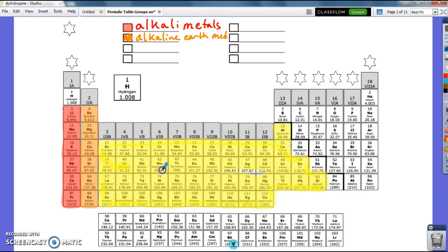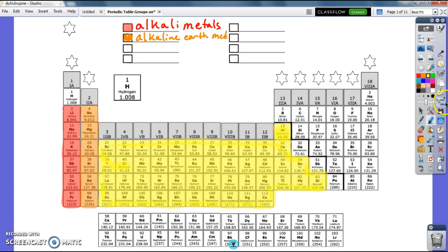These are the transition metals. They transition from this side of the periodic table to this side of the periodic table. This is the transition point between our metals and our non-metals.